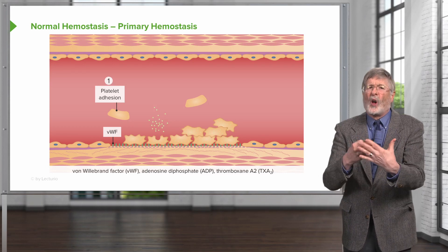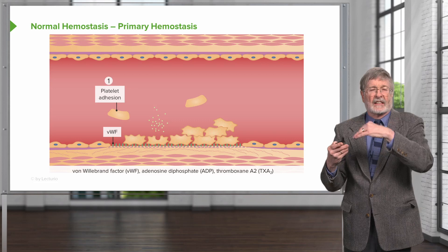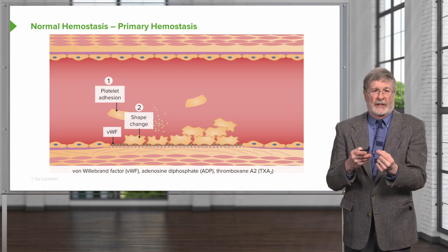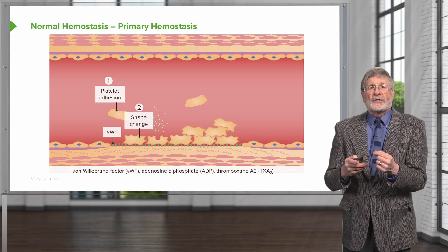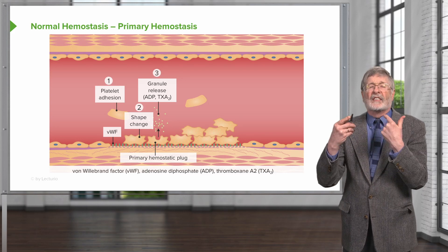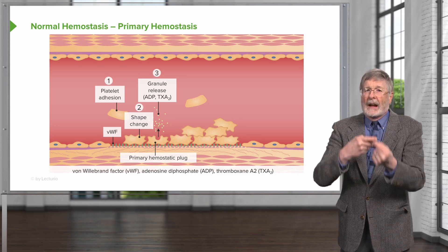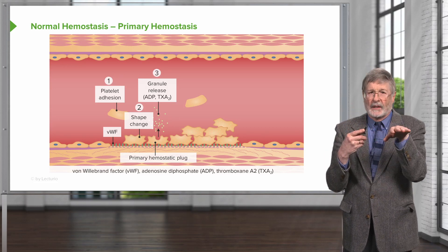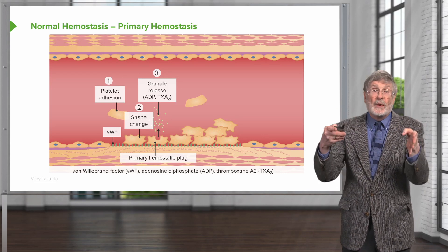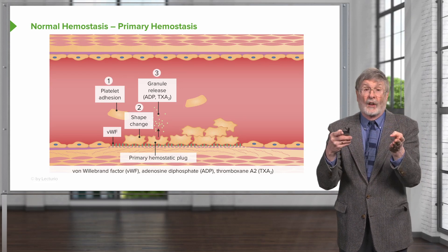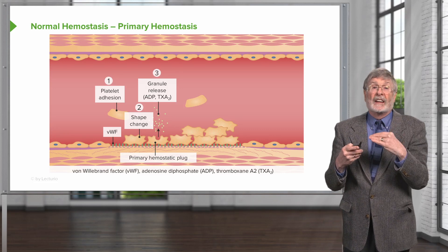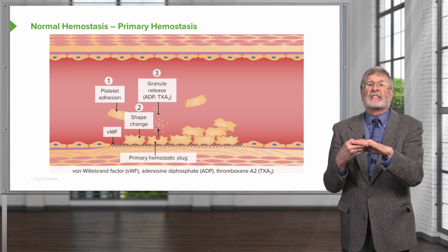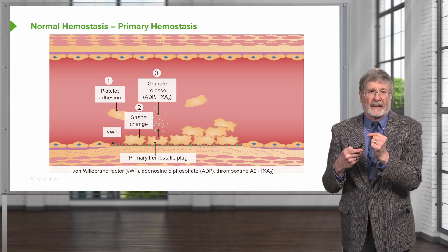That VWF has been there all along, but it's been covered up by endothelial cells sitting on top of it. Once the platelets adhere, they undergo a shape change. They will also release granules to recruit additional platelets. This initial binding of platelets over the denuded endothelial surface — where we've lost the endothelial cells — is called the primary hemostatic plug. It's the first step, but it's not going to be sufficient to stop the bleeding. We're going to have to go a few more steps to make that happen.